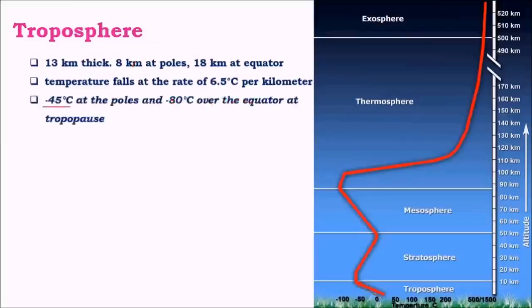This varies at poles and at the equator. At the poles, the average temperature at maximum height is about –45 degrees Celsius, whereas at the equator it is about –80 degrees Celsius. This is because of the varying thickness of troposphere — at the equator the thickness is about 18 km, so the falling temperature is greater over that large distance. At the poles it is only about 8 km, so the lapse rate effect over that shorter distance is lower.